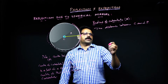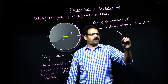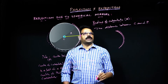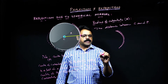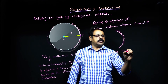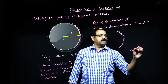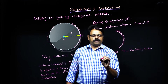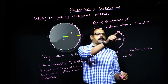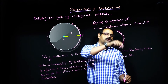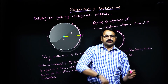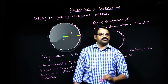Here you need to remember one point. If I have a concave mirror like this, the line joining the center of curvature and the pole is called the principal axis. It is perpendicular to the tangent drawn to the surface at the pole.